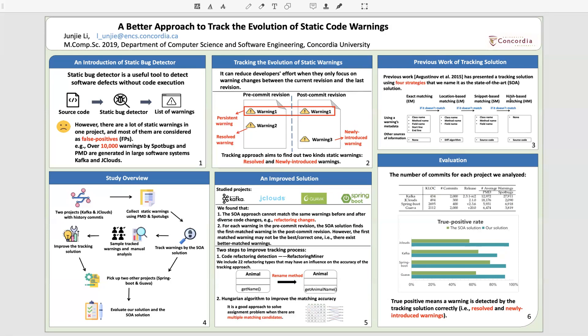The four strategies have different levels to match warnings. The upper blocks show the user warnings metadata for each strategy. In a warning, the metadata should have class name, method name, field name, start line, and end line.